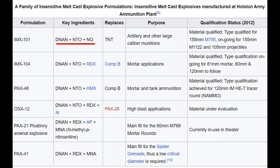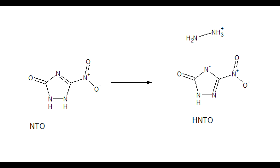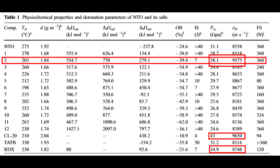For me, NTO on its own isn't that interesting, but it has some fascinating derivatives. NTO is a weak acid and can form salts. Among them, its hydrazineum salt HNTO is the most intriguing. It has a detonation velocity close to CL-20 and an explosive energy similar to HMX. It also boasts very good thermal stability, making it a rather interesting energetic material that could potentially replace HMX.